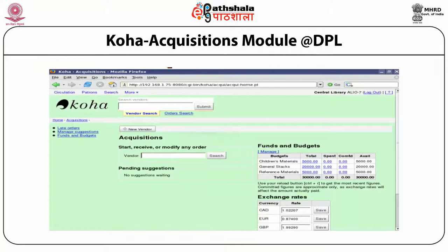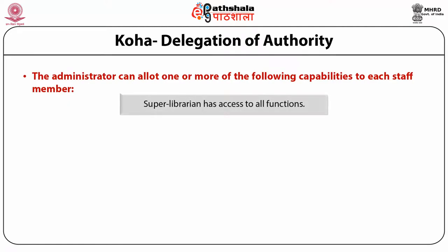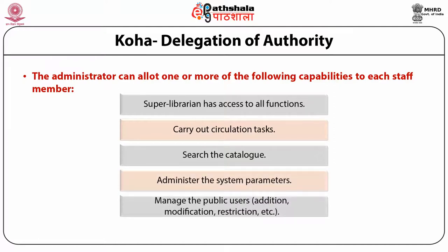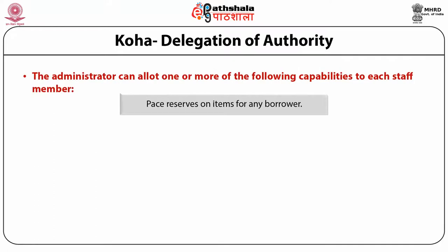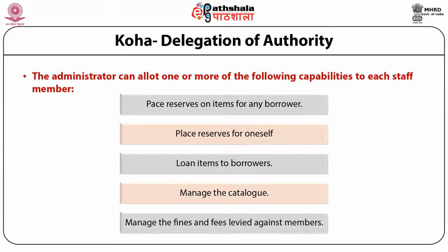The screen shows the acquisition module of Delhi Public Library. The administrator can allot one or more capabilities to each staff member. A Super Librarian has access to all functions and can carry out circulation tasks, search the catalog, administer system parameters, manage public users (addition, modification, restriction), administer staff access, place reserves on items for any borrower, place reserves for oneself, loan items to borrowers, manage the catalog, and manage fines and fees levied against members.